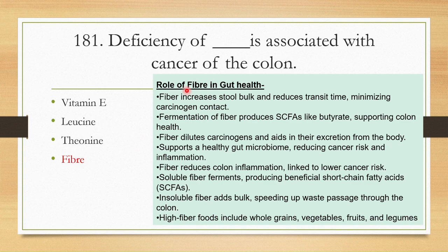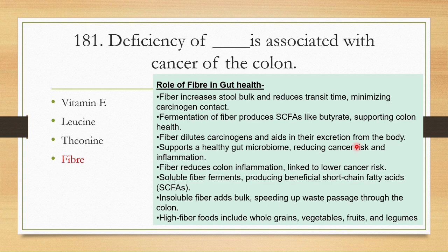The role of fibers: Fiber increases stool bulk and reduces transit time, minimizing carcinogen contact. Fermentation of fiber produces short-chain fatty acids like butyrate that support colon health. Fiber dilutes carcinogens and aids in their excretion from the body, and supports gut health and the microbiome as well.